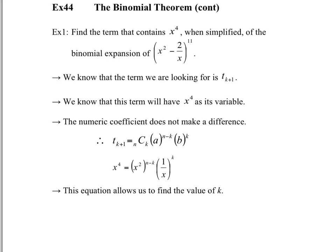The exponent of the first term is n minus k, and the exponent of the second term is k. There's one value we do know: the value of n, which is 11 — that's the exponent of your binomial. So our formula looks like: x to the power of 4 equals x to the power of 2, to the power of 11 minus k, and then x to the power of negative 1 — because 1 over x is the same as x to the power of negative 1 — to the power of k. That makes it a little easier to work with.